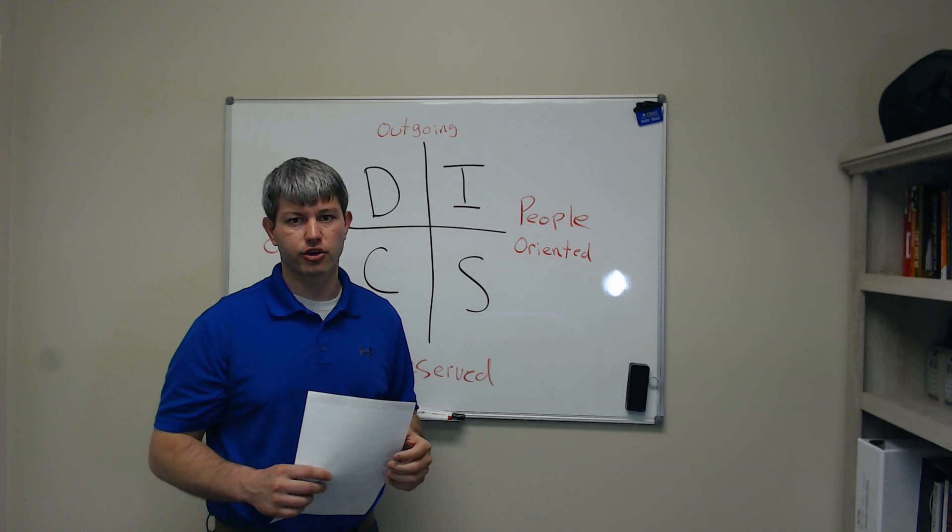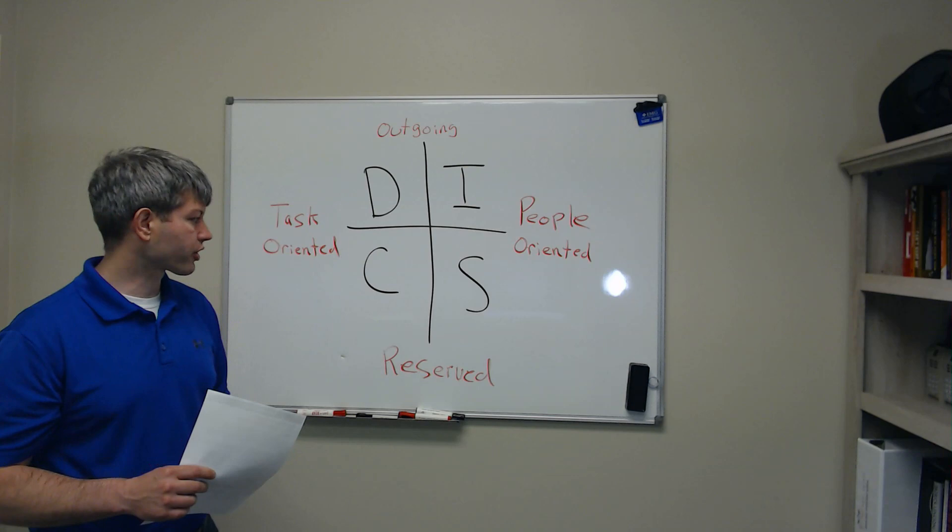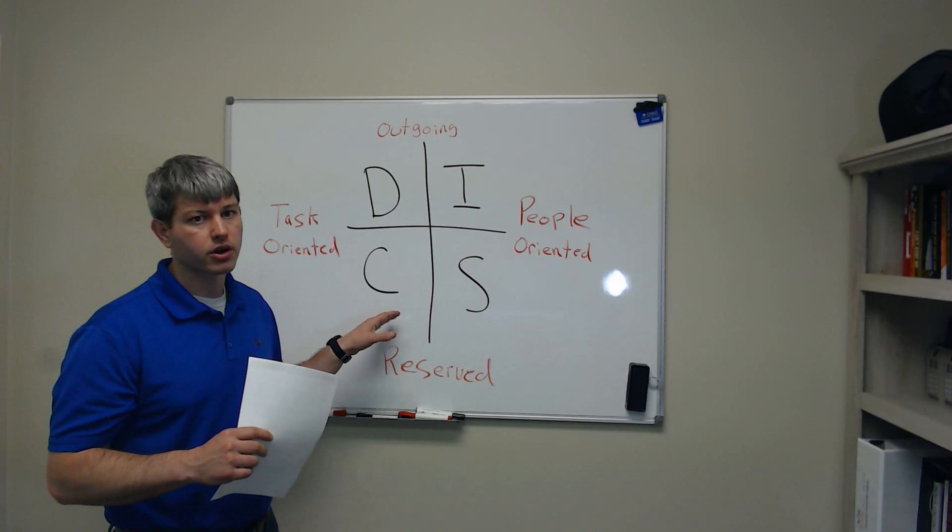The C personality is your analytical type. They want to be efficient. They do a lot of research to make logical decisions. So they're going to be your engineer types, accounting. They're going to look at numbers over and over and do a lot of research before making decisions.